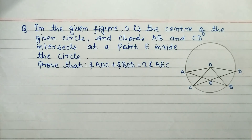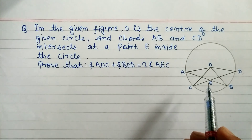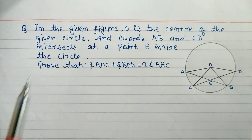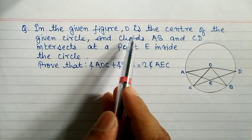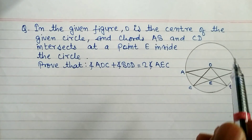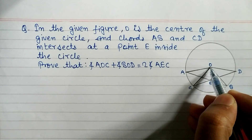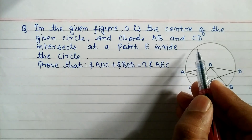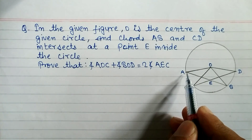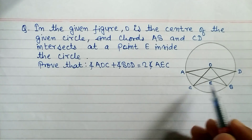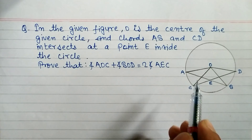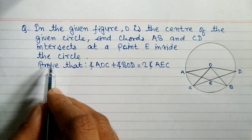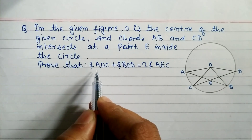Hello everyone. Today we will learn how to solve the unseen theorem. In the given figure, O is the center of the circle. Chords AB and CD are given, and they intersect at point E.